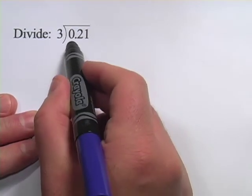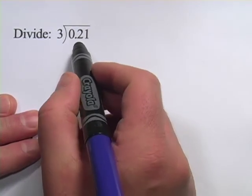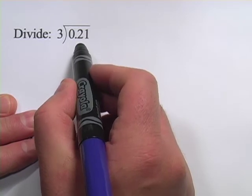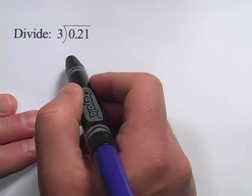It says divide 0.21 by 3. Now, if this just said divide 21 by 3, the answer would be 7, right?